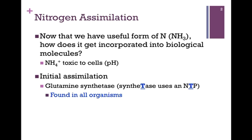Now the question is, how do we incorporate this ammonia into biological molecules? We must first realize that ammonia can be toxic to the cells. It's very alkaline, and if we try to stockpile this compound, it will significantly affect the pH of the cell, and that will influence many processes, many proteins and enzymes in the cell.